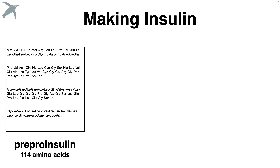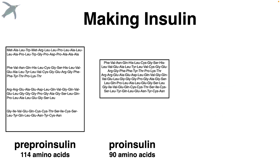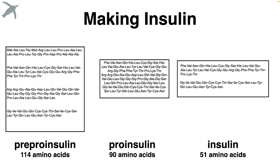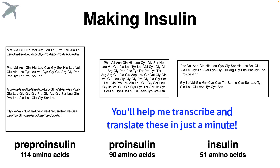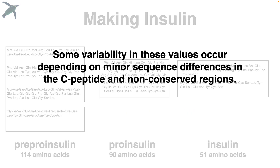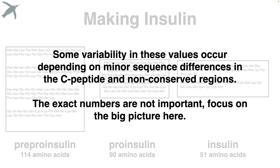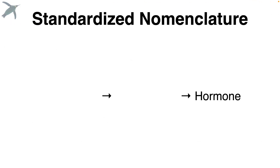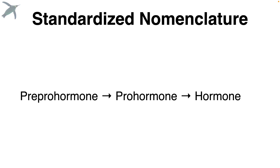We start with pre-pro insulin, then pro insulin, then insulin. You notice things are getting removed here — the sequence is getting shorter. The exact numbers are not important; just focus on the big picture. To make a hormone, we start with a pre-pro hormone, then we have a pro hormone, and finally the active hormone.